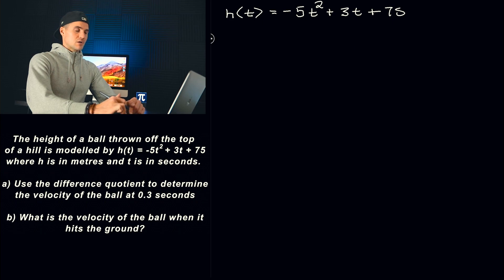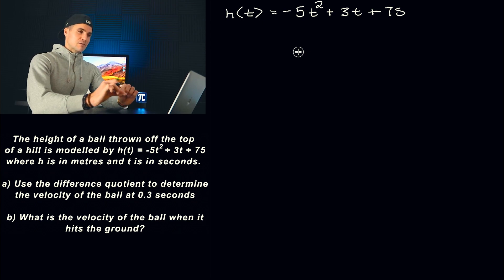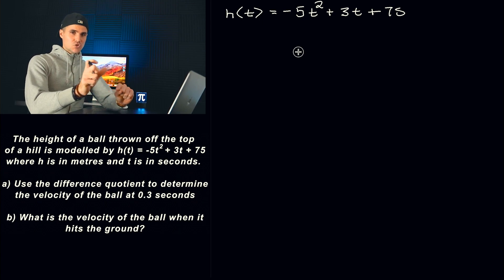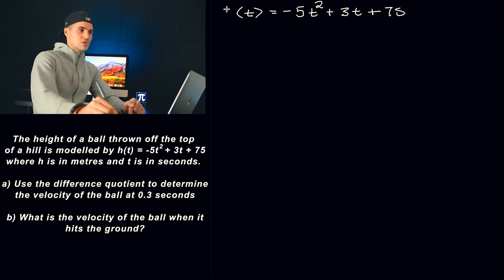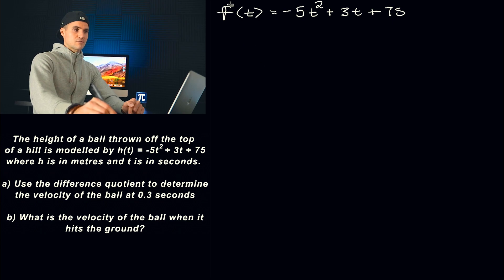The first thing I'm going to do is rewrite this H of T function. Because the difference quotient uses an H within it — and that H is different from this H, which represents the height — I'm going to rewrite the function in terms of F. So instead of H of T, I'll have F of T equals this, where F represents the height.